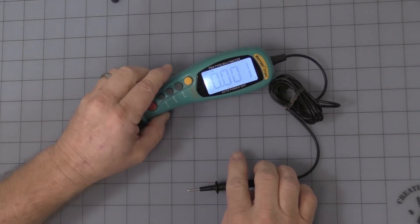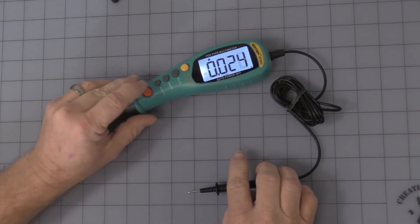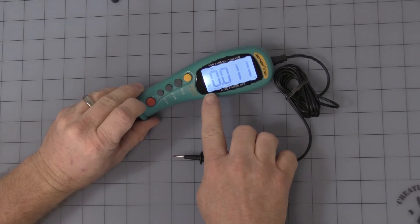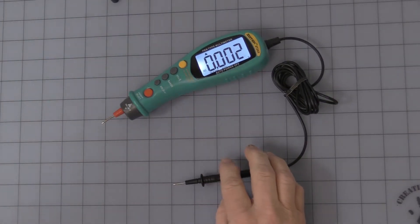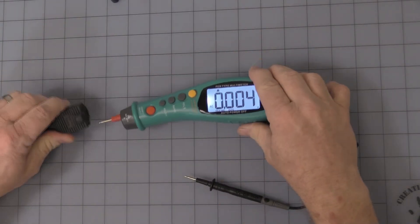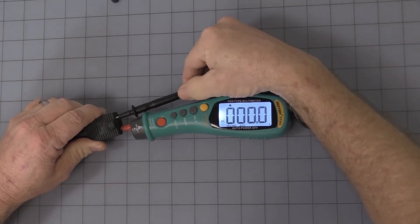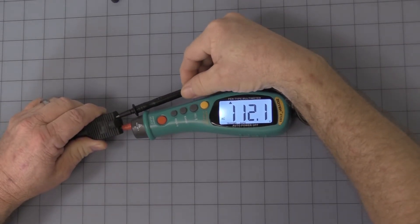Next one is AC volts. And I happen to have a nice little extension cord plugged in here just to show you what it looks like. Plug it in. Make contact, 112.